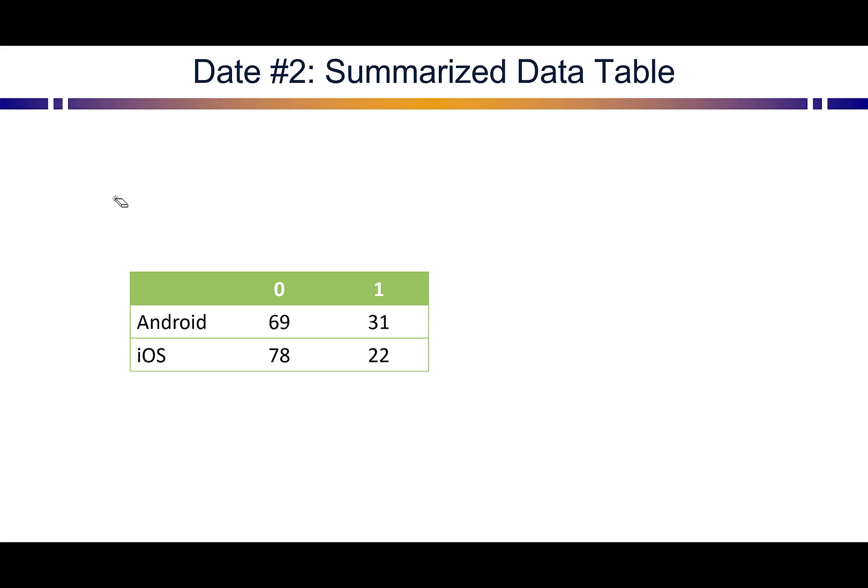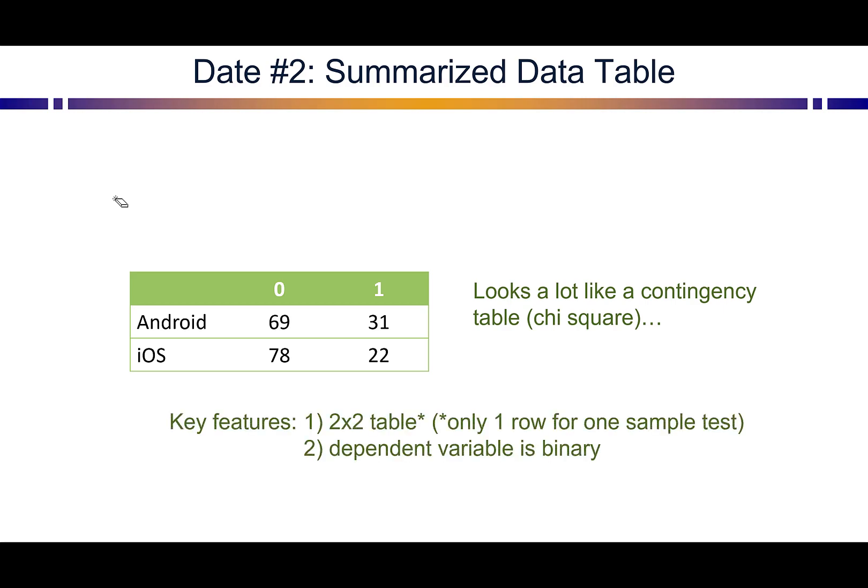This looks a lot like we're going to see for a chi-square table. And for tests of proportions, you would identify your time to use them because the table is only a two-by-two table, or it could be a one-by-two table if it's a one-sample test.